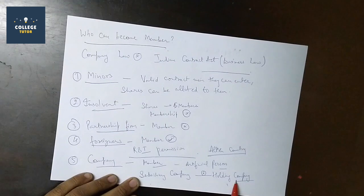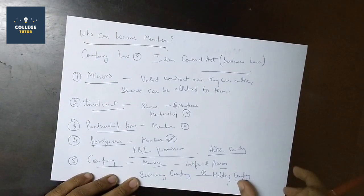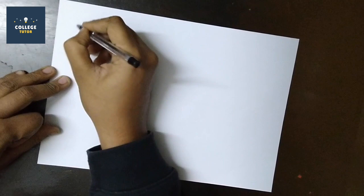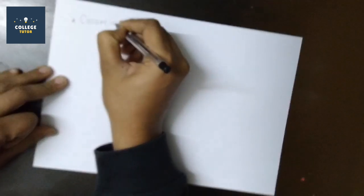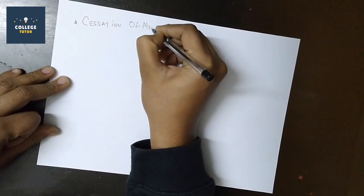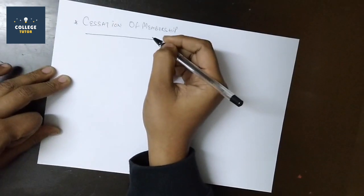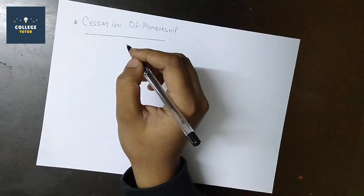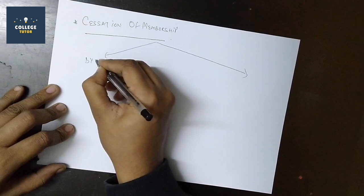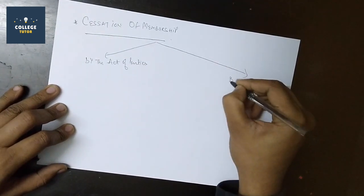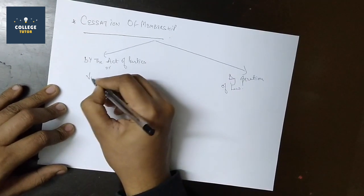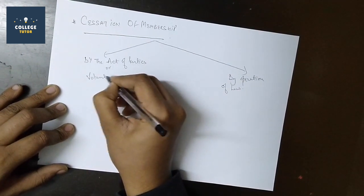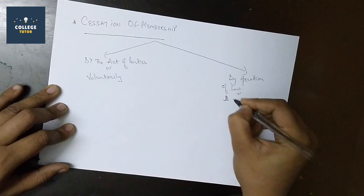Our next topic is cessation of membership - how does membership end? There are two things: membership can end first by the act of parties, which is voluntary, or second by operation of law, which is involuntary or forced.